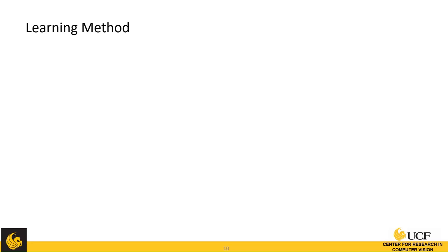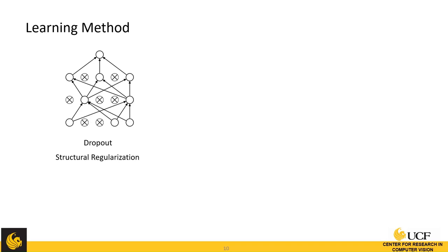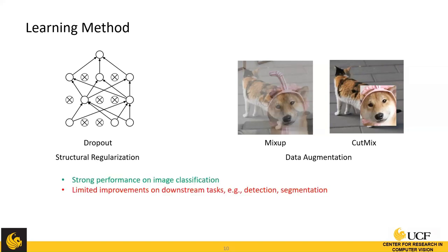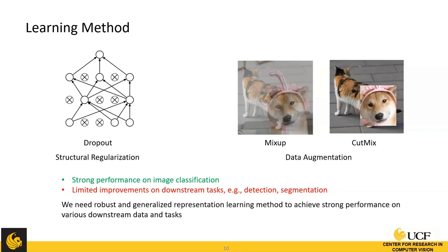Another direction to improve representation learning is to design new learning methods. One kind is regularization, such as dropout, where we randomly drop neurons during training to alleviate overfitting. Another kind is data augmentation, where we augment training data to increase diversity. Although these methods have achieved great success on image classification, the improvements don't transfer well to downstream tasks such as detection and segmentation. We still need more robust and generalized representation learning methods.